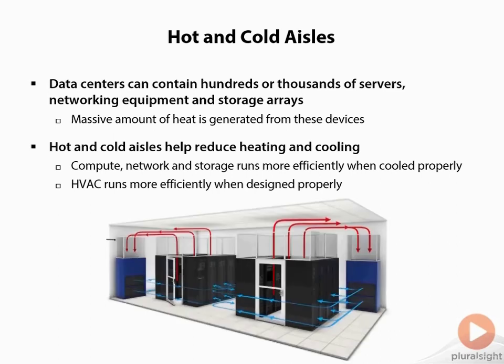Instead of simply placing equipment wherever it fits, it's much more beneficial to set it up in a fashion that takes advantage of hot and cold aisles and maximizes our HVAC. The basic concept is to place the front of the systems on either side facing each other so that cool air can be drawn into that aisle. The opposing aisles go back to back, so heat blows out the back of those systems — those become the hot aisles. The HVAC pulls that heat out, recycles it, filters it, and maintains a very clean atmosphere.